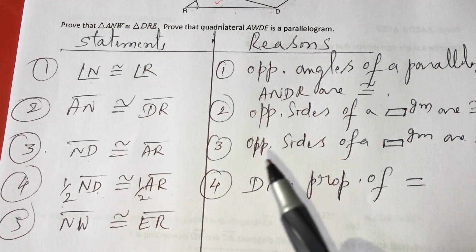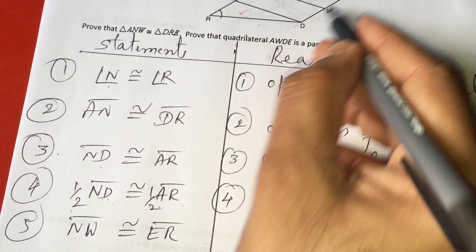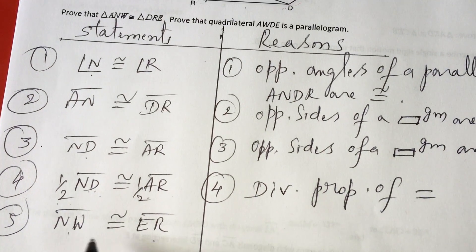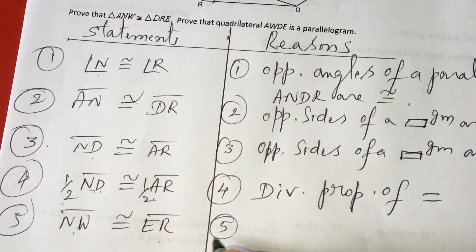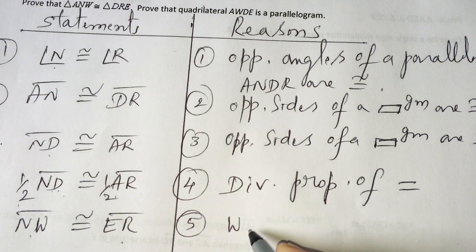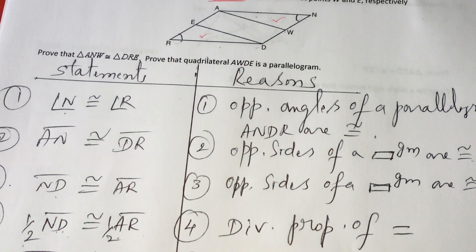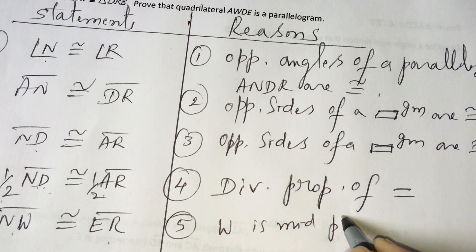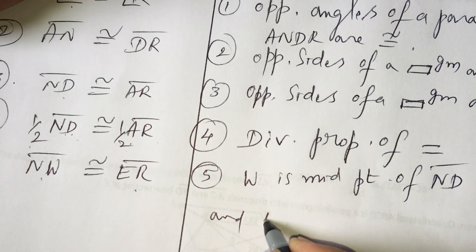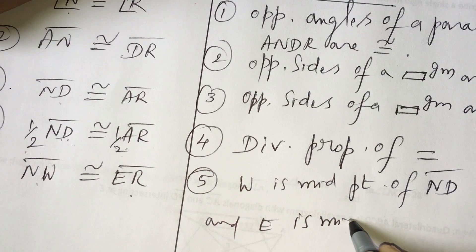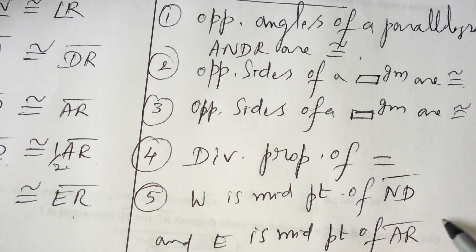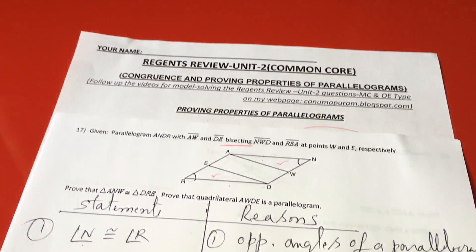So now, what is half of ND? It is NW. What is half of AR? It is ER. So they are equal. See, what is the reason why I am writing this? Because W is midpoint of ND, and similarly, E is midpoint of AR.